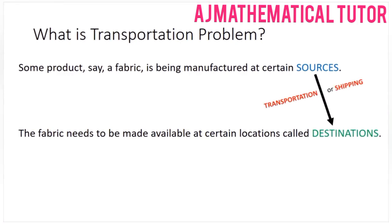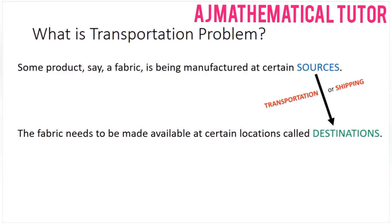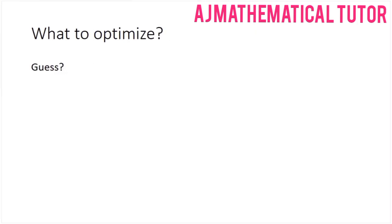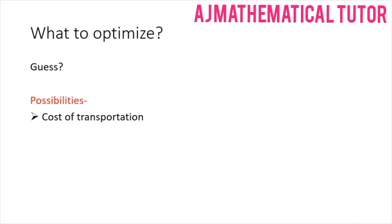Problems in this category are known as transportation problems or shipping problems. Now let's connect this with optimization — what needs to be optimized in such problems. For example, we can minimize the cost of transportation, we can minimize the time of transportation, or in certain examples we can also minimize the distance traveled.